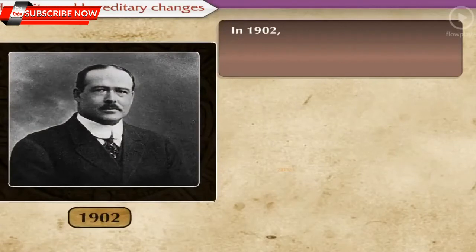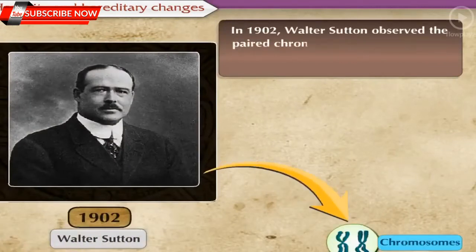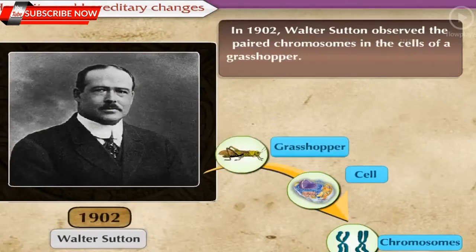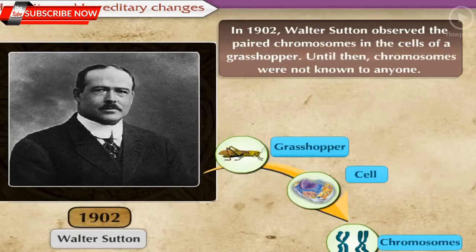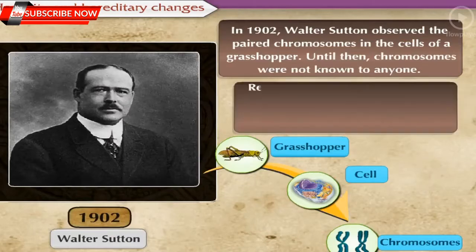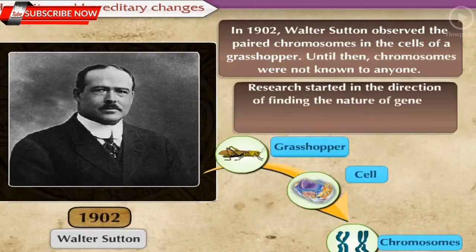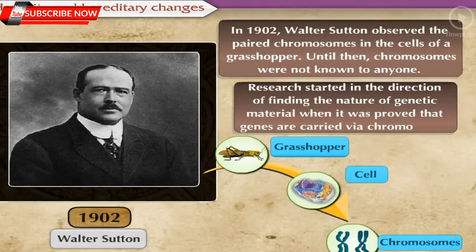Later in 1902, Walter Sutton observed the paired chromosomes in the cells of a grasshopper. Until then, chromosomes were not known to anyone. Research started in the direction of finding the nature of genetic material when it was proved that genes are carried via chromosomes.